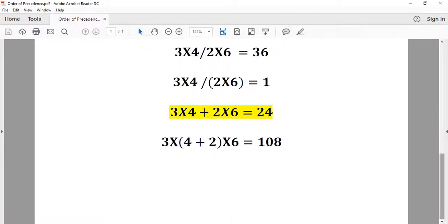3 times 4 plus 2 times 6. The priority goes first to multiplication, so 3 times 4 equals 12, 2 times 6 equals 12, then the addition: 12 plus 12 equals 24.